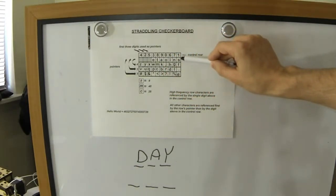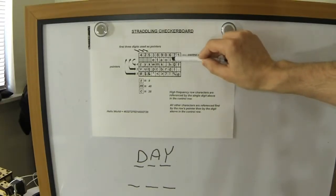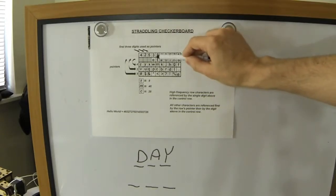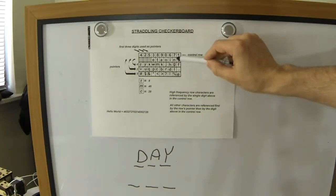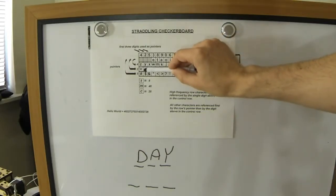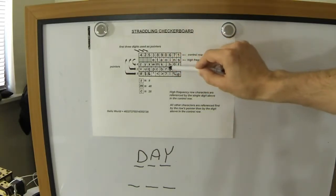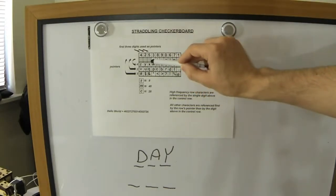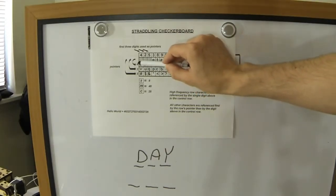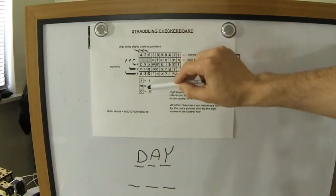So the high-frequency row, when you need to convert them to numbers, you simply take the number that's above it. That's all you have to do. So E is 3, T is 8, A is 9, and so forth. But for the rest of these rows, you first take your pointer number, and then the number that's directly above.